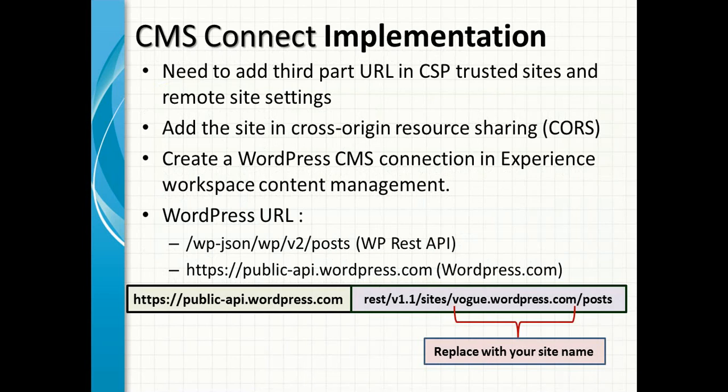For WordPress, we have two public APIs we can use. I will use the second one. The first part will be the same for everyone: publicapi.wordpress.com. The second part is where the site name is present — you can replace it with your own site name. In my case, I have used 'wog1'. You need to just replace it with your site name and the API is ready for you. Once the API is ready, you need to add publicapi.wordpress.com in your CSP trusted site and your cross-origin resource sharing.